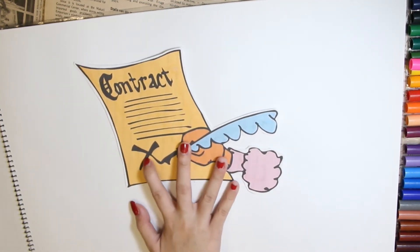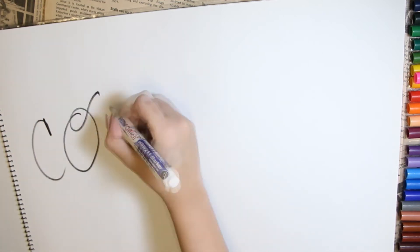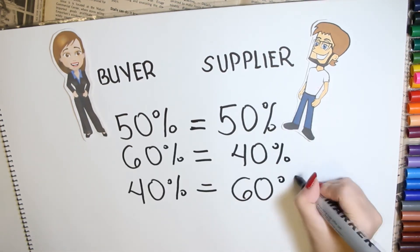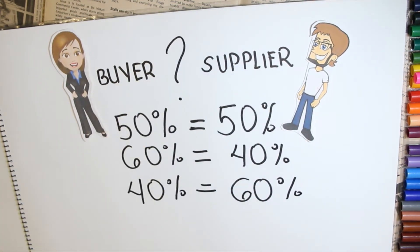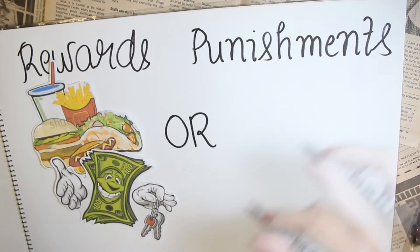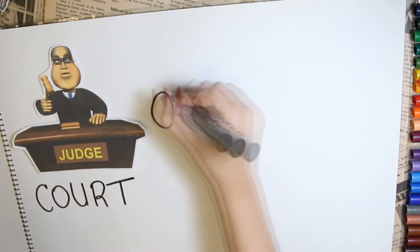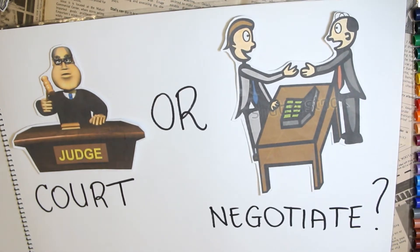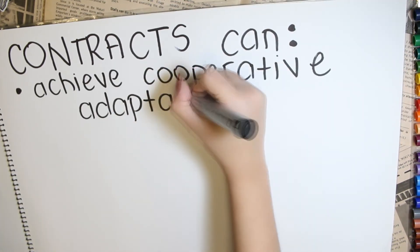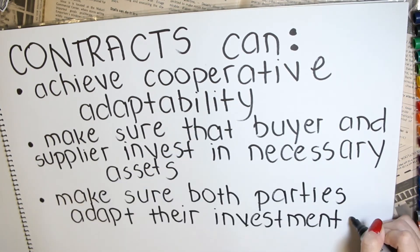To avoid betrayal in a business, a written document serves as a superhero — this is when contracts come in. A solution for this conundrum is a long-term contract in which buyer and supplier specify who has to make which investments. They also specify the rewards and punishments for either following or not following their duties and responsibilities. Parties will also need to specify how they want to address conflicts — whether through court cases or negotiation — because contracts can achieve cooperative or coordinated adaptability, ensuring both parties invest in necessary assets and adapt accordingly.